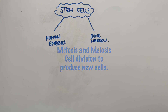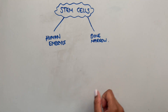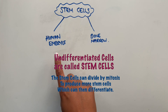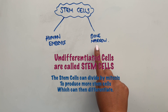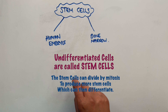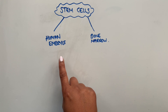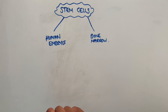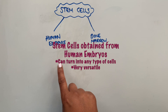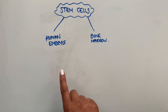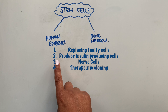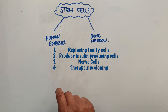Now we will consider cells that are undifferentiated — called stem cells. Stem cells can be found in two places: from human embryos or from bone marrow. We can then differentiate them into cells that are needed. Stem cells from embryos can turn into any type of cell, making them very versatile. We use human embryo stem cells for things like replacing faulty cells in sick people, making insulin-producing cells to help treat people with diabetes, and producing nerve cells to help treat people with paralysis through spinal injuries.